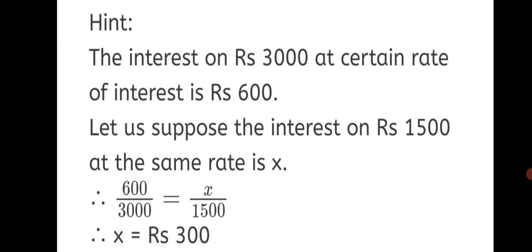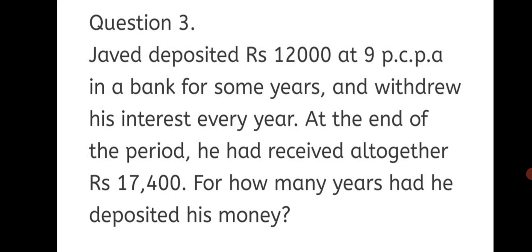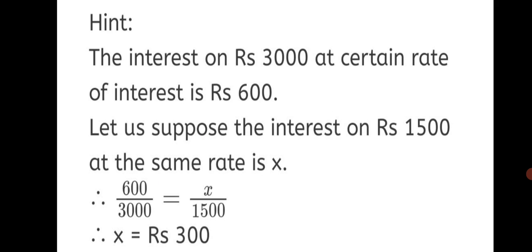Solution: Rs 300. The interest on Rs 3000 at a certain rate is Rs 600. Let the interest on Rs 1500 be X. Taking direct proportion: 600/3000 = X/1500. Cross multiplying: X = (600 × 1500) / 3000 = 300. So the interest on Rs 1500 would be Rs 300, given the same rate of interest and same number of years.